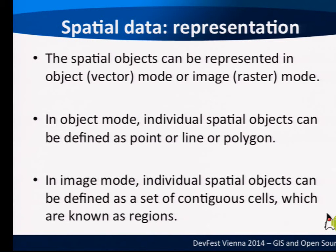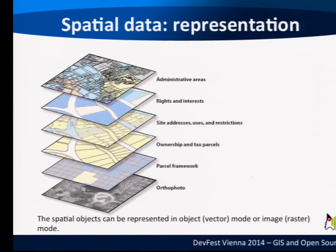How can we represent spatial data — on a computer or another system? We can represent it in object mode or image mode. In object mode, individual spatial objects can be defined as points, lines, or polygons. In image mode, individual spatial objects are defined as a set of contiguous cells, known as regions. When you have an image, the computer splits it into many little cells, and these cells contain an attribute — for example, the color at a specific point.